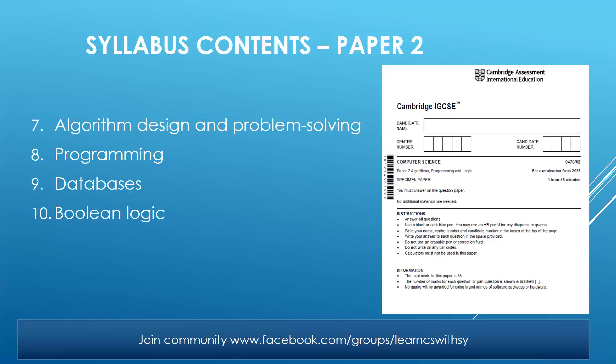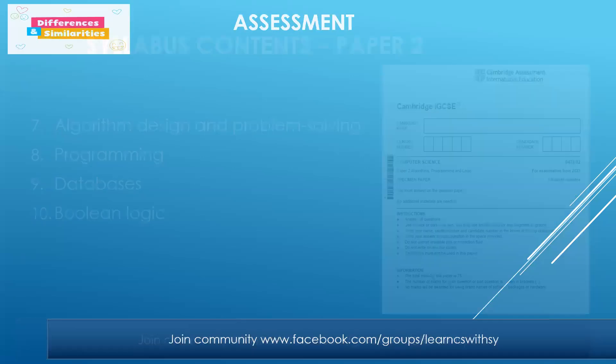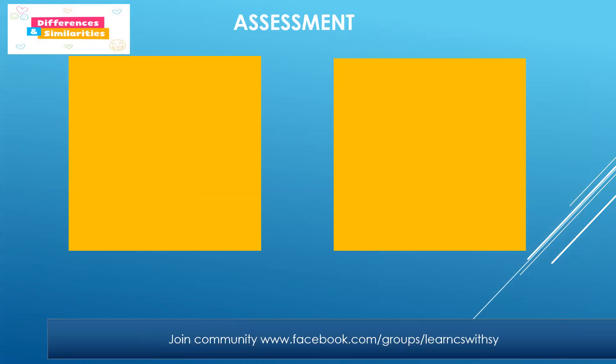For Paper 2, the topics students have to study are algorithm design and problem solving, programming, databases, and boolean logic. Databases is a relatively simple topic, and boolean logic deals with logic gates. For algorithm design, problem solving, and programming, students have to be very well versed with programming logic, and for that we recommend students should also learn a programming language like Python, Java, or VB.NET — whichever they want to study.